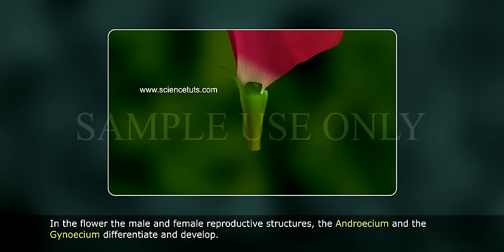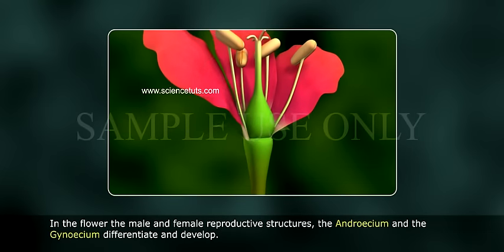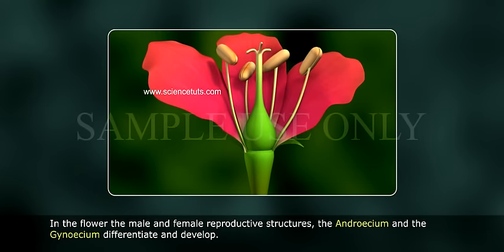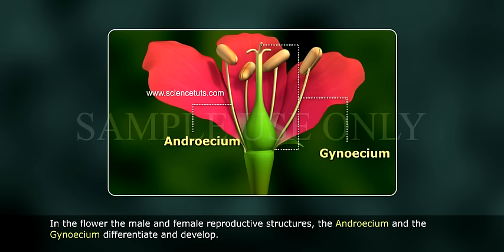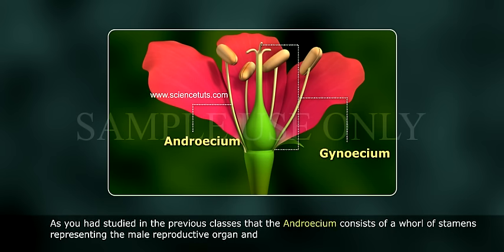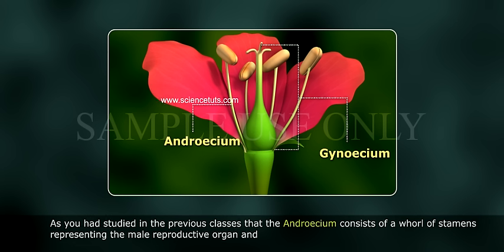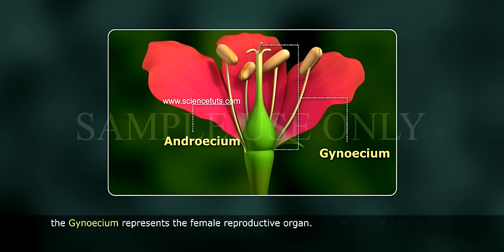In the flower, the male and female reproductive structures differentiate and develop. The androecium consists of a whorl of stamens representing the male reproductive organ, and the gynoecium represents the female reproductive organ.